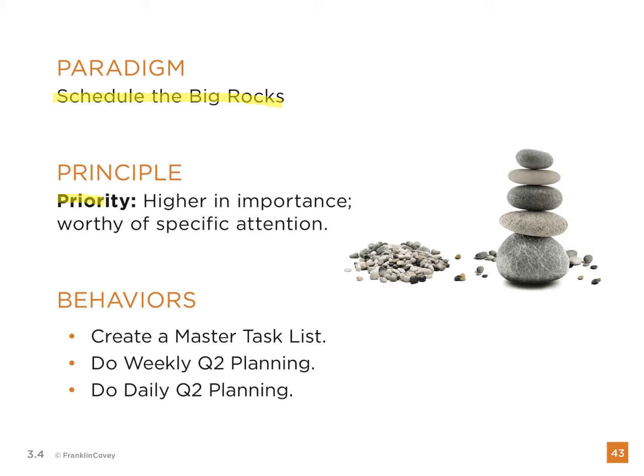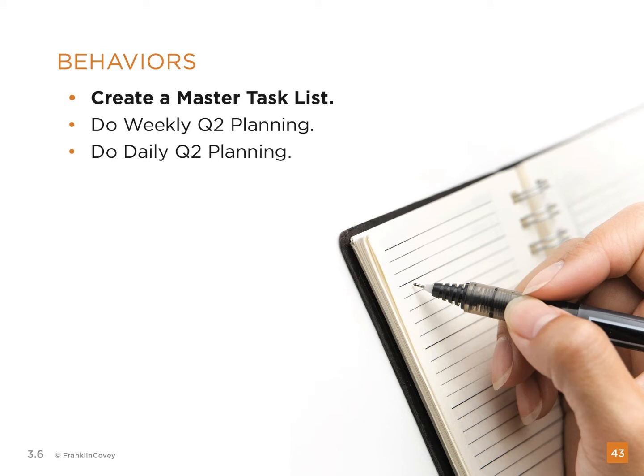The principle today is priority. Priority is something that is higher in importance and worthy of specific attention. The behaviors that we're going to be involved in to do this is creating a master task list and doing weekly and daily planning. So the first behavior is creating a master task list.